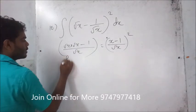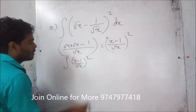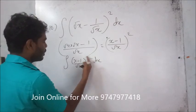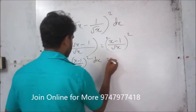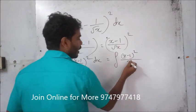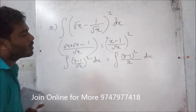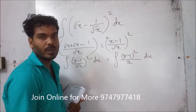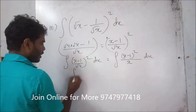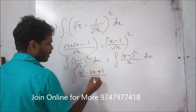So integration of x minus 1 divided by root x into whole square dx. When we are going to x minus 1 into whole square divided by root x into whole square. Expanding x minus 1 whole square gives x squared minus 2x plus 1. Now, integration of x squared minus 2x plus 1 divided by x.